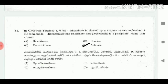83. In glycolysis, fructose-1-6-bisphosphate is cleaved by an enzyme to two molecules of three-carbon compounds: D-hydroxyacetone phosphate and glyceraldehyde-3-phosphate. Name that enzyme. Answer: Aldolase.